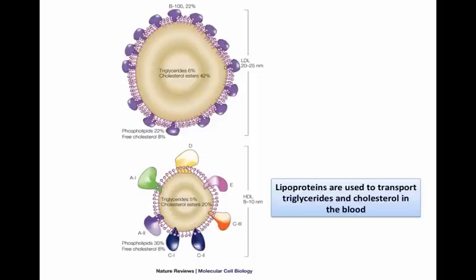So why do we form clots in our blood vessels to begin with? Well, the biggest risk factor for that happening is the disease known as atherosclerosis. So how does atherosclerosis happen?